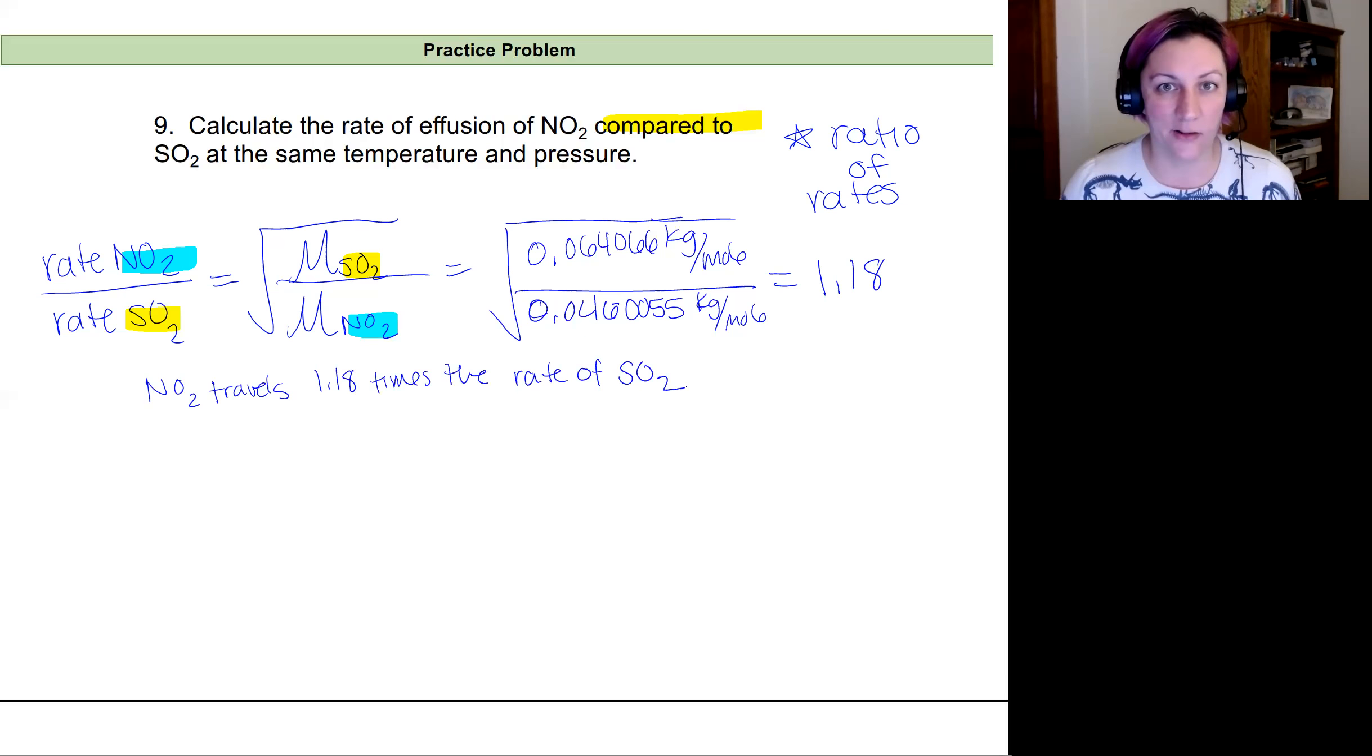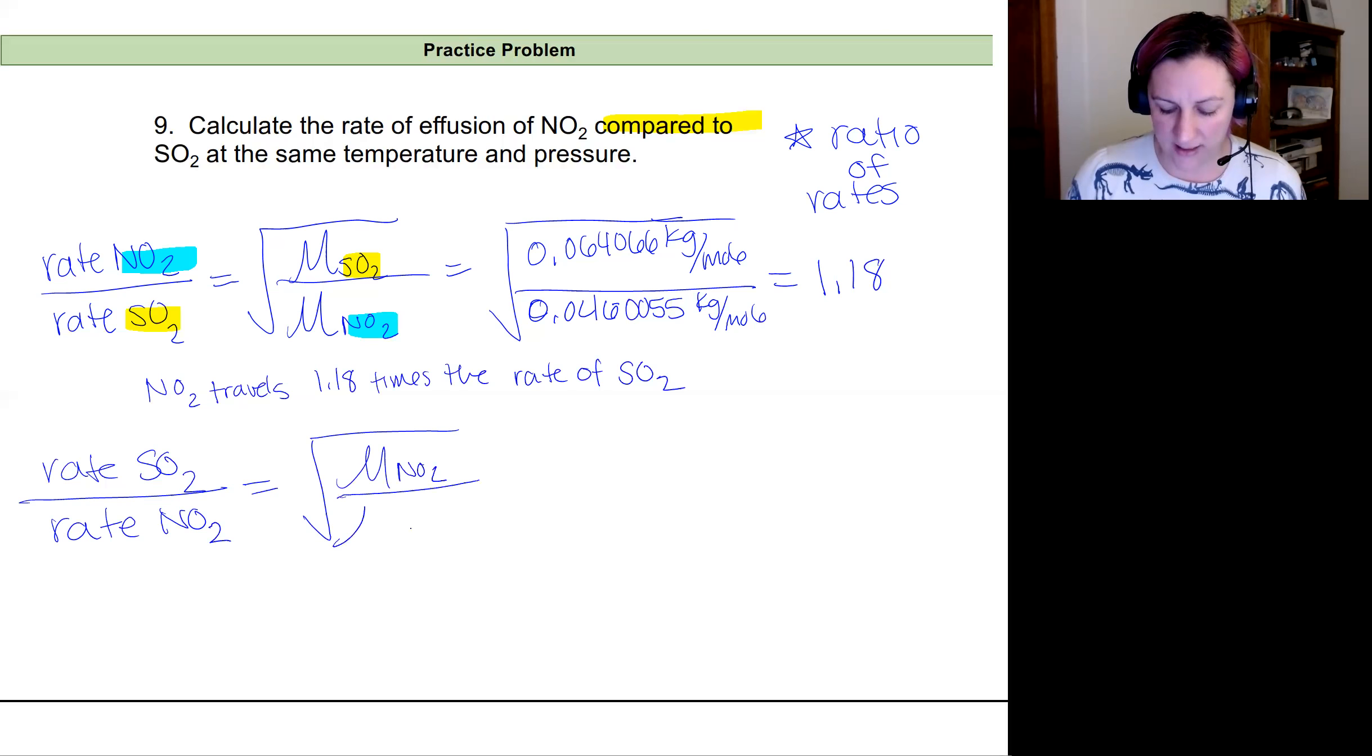Well, what if you had put SO2 on the top? Your answer might look a little different. So if instead you started with the rate of SO2 in the numerator and NO2 in the denominator, then we would have our ratio of rates flipped. So we would look at the molar mass in kilograms of NO2 on top and the molar mass of sulfur dioxide in kilograms on the bottom.